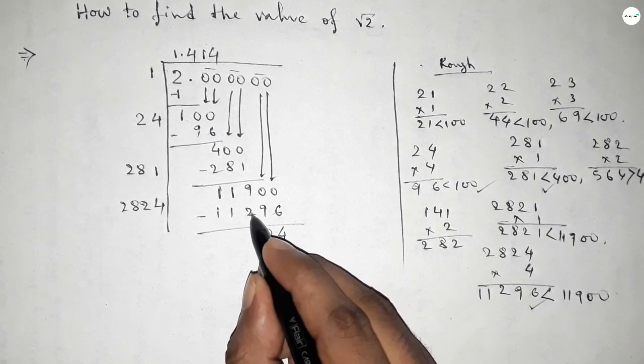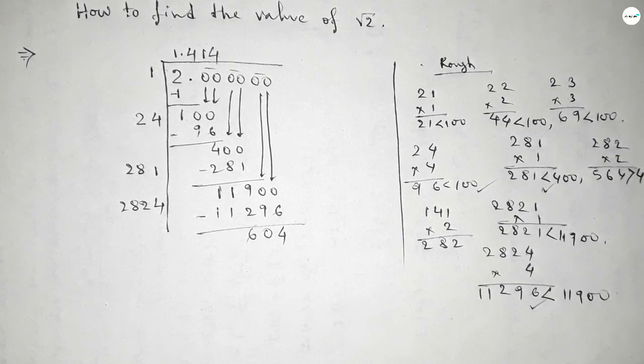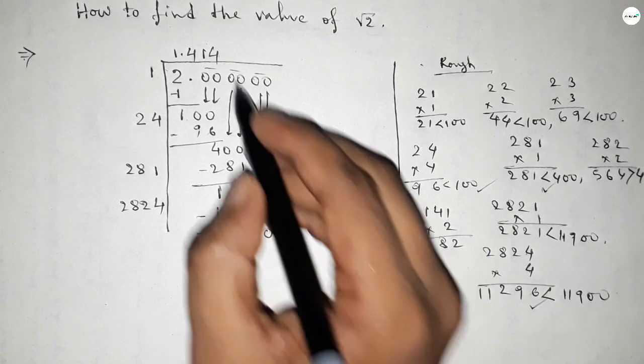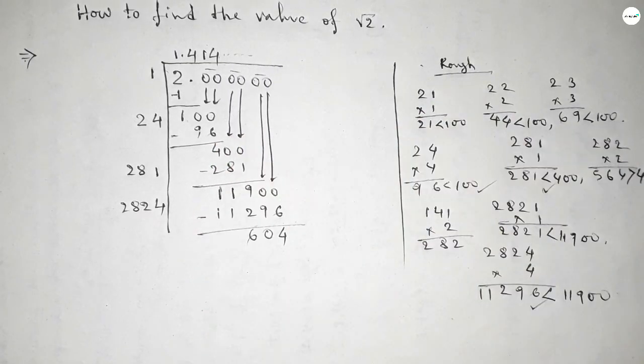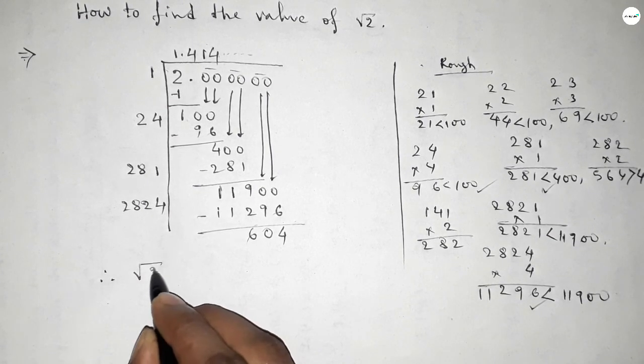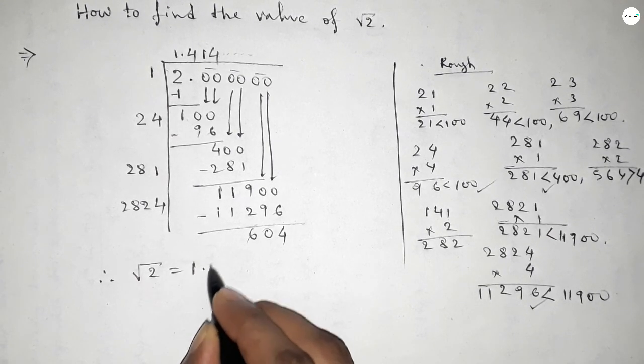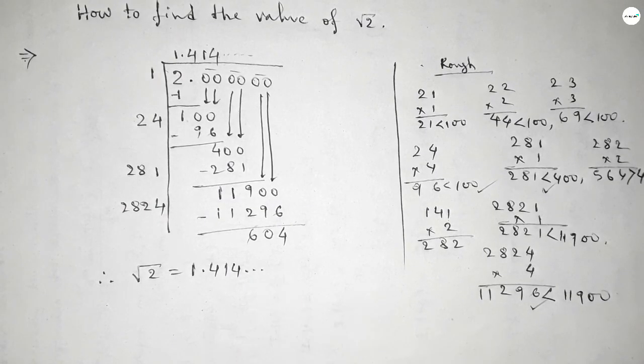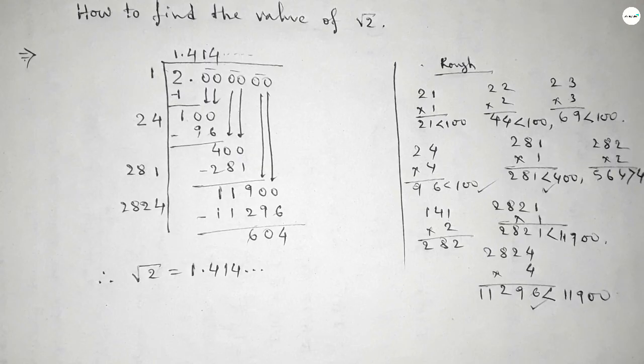Now subtracting this. We can continue continuously finding the digit, and therefore root 2 equals we get 1.414 continuous up to 3 decimals. So this is the process to find out the value of root 2. That's all, thanks for watching.